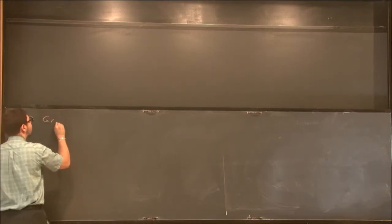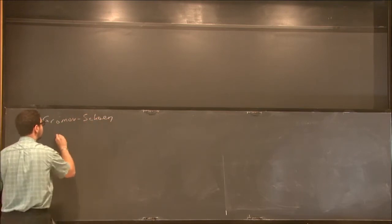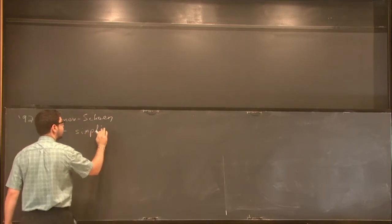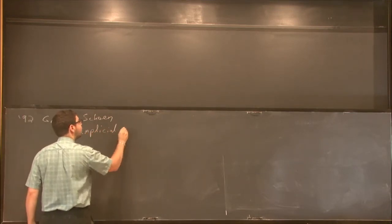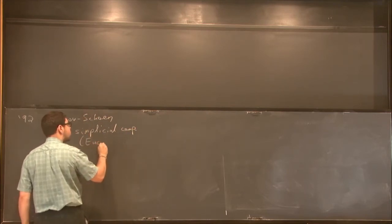So the singular space theory started back in 92 with Gromov and Shane, who let N be a simplicial complex, Riemannian simplicial complex. In particular, they were interested in Euclidean buildings.